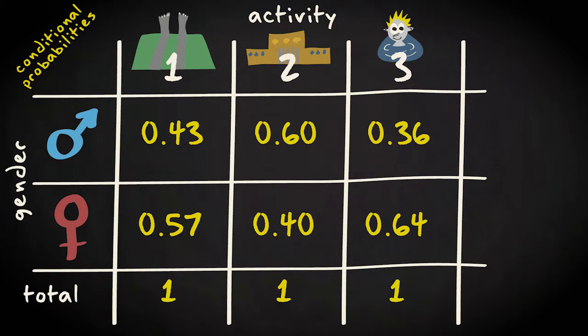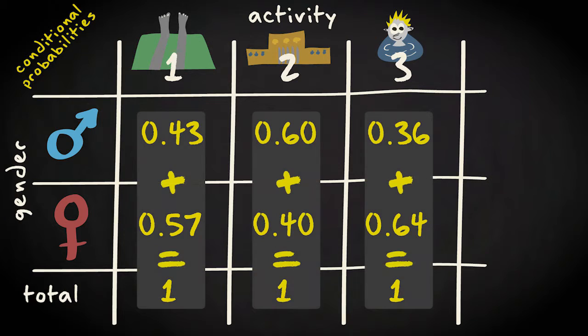The same can be done for the conditional probabilities of gender given activity. You can see that the rule stating that the sum of all conditional probabilities should be one does apply.